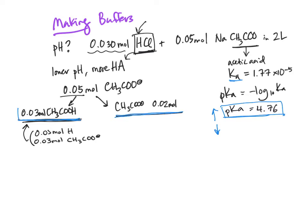Because we have a greater proportion of the acid form, 0.03 moles compared to only 0.02 of the base form, this is actually, the pH is going to be lower than the pKa. Let's use the Henderson-Hasselbalch equation and actually get a number and see if our prediction is correct.